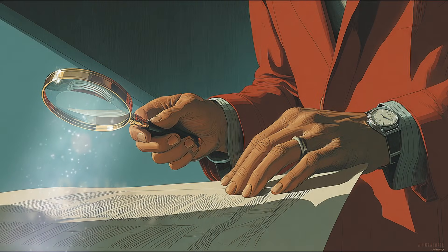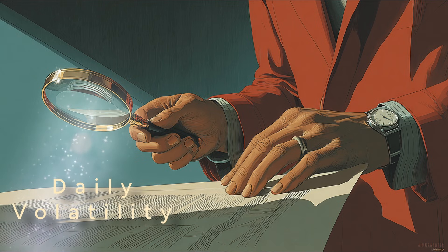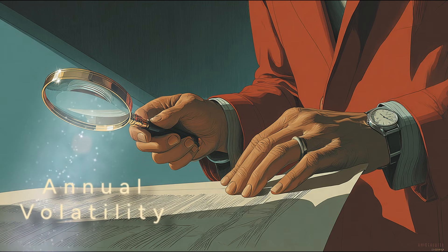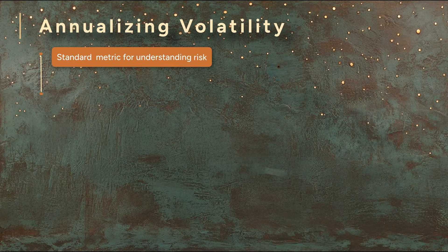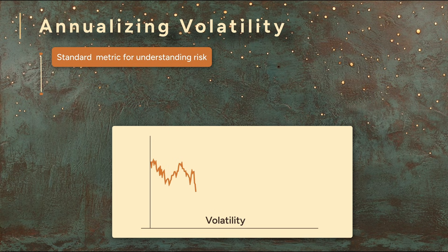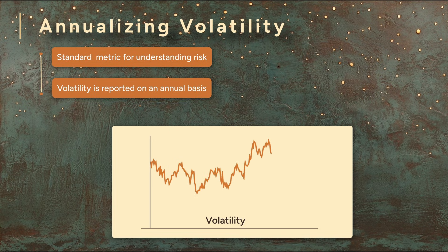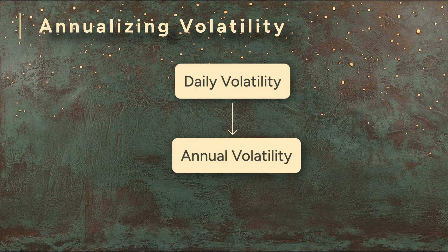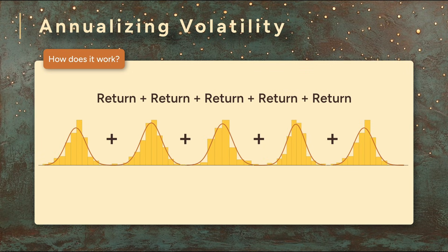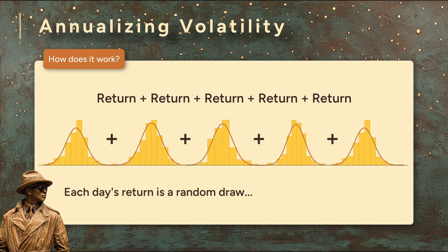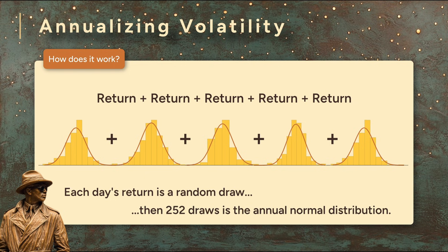So far we've been looking at daily volatility, because daily pricing and thus daily returns are the industry standard. But the most common unit of volatility is the annual volatility. In finance, it's the standard language people use when they talk about how risky an investment is. So even though we calculate volatility from daily data, we usually report it on an annual basis. The fundamental principle is that when you add up returns over multiple days, you're basically adding up a lot of daily normal distributions. If you imagine each day's returns as a random draw from a normal distribution, then stacking up 252 of those gives you the normal distribution for the year.